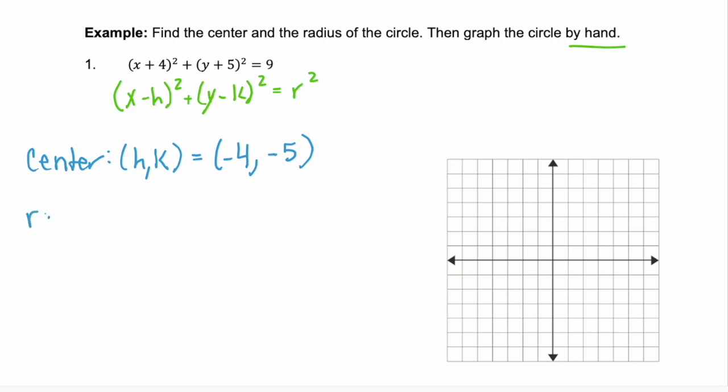Then we can find the radius. We know that r squared is equal to 9. Or r is equal to plus or minus the square root of 9. So the radius is equal to a positive 3. Radius is a distance. So it needs to be a positive value.